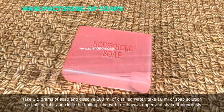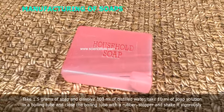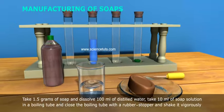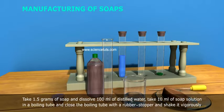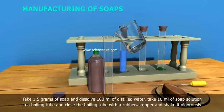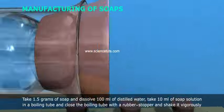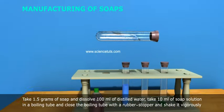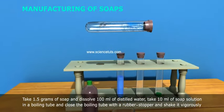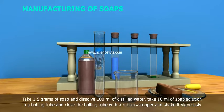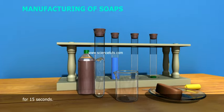Quality of Soap Testing: Take 1.5 grams of soap and dissolve in 100 milliliters of distilled water. Take 10 milliliters of soap solution in a boiling tube, close the boiling tube with a rubber stopper, and shake it vigorously for 15 seconds.